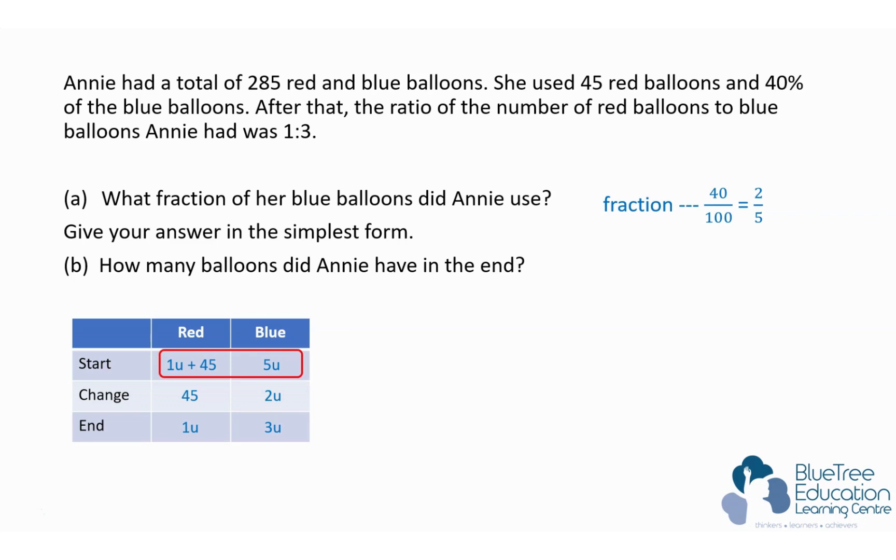beginning. We know she had a total of 285 red and blue balloons, so I'm going to draw another column called the total column. Looking at the total column, the total number of balloons in the beginning is 6 units plus 45. So 6 units plus 45 must equal 285.